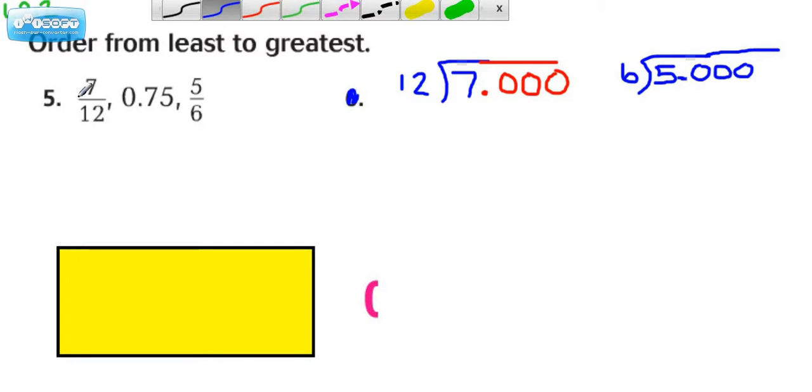The first thing you should notice is we have a mix of fractions and decimals. So you have to choose a strategy. Most people are going to choose to change the fractions into decimals, and an easy way to do that is to take the numerator and divide it by the denominator.